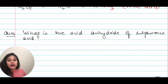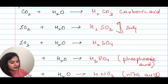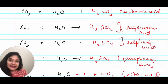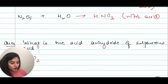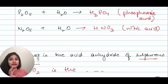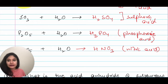A common exam question from this topic: what is the acid anhydride of sulfurous acid? Sulfurous acid is H₂SO₃, so its acid anhydride is SO₂. What is the acid anhydride of sulfuric acid? That is SO₃. What is the acid anhydride of phosphoric acid? That is phosphorus pentoxide, P₂O₅. Answer accordingly.